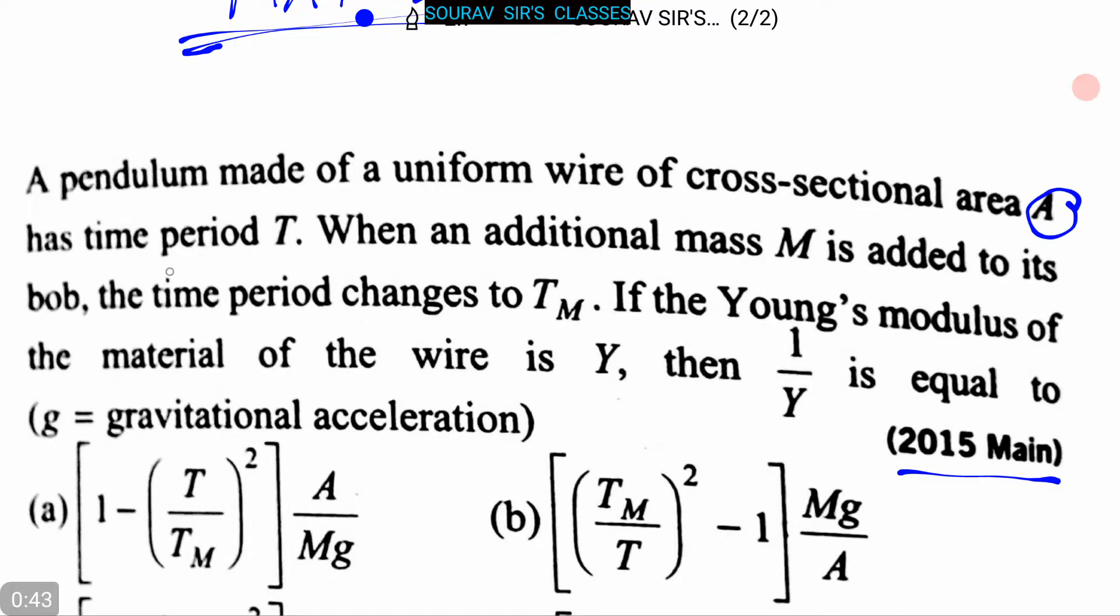When an additional mass M is added to its bob, the time period changes to TM. If the Young's modulus of the material of the wire is Y, then 1 by Y is equal to what? Here, G is gravitational acceleration.